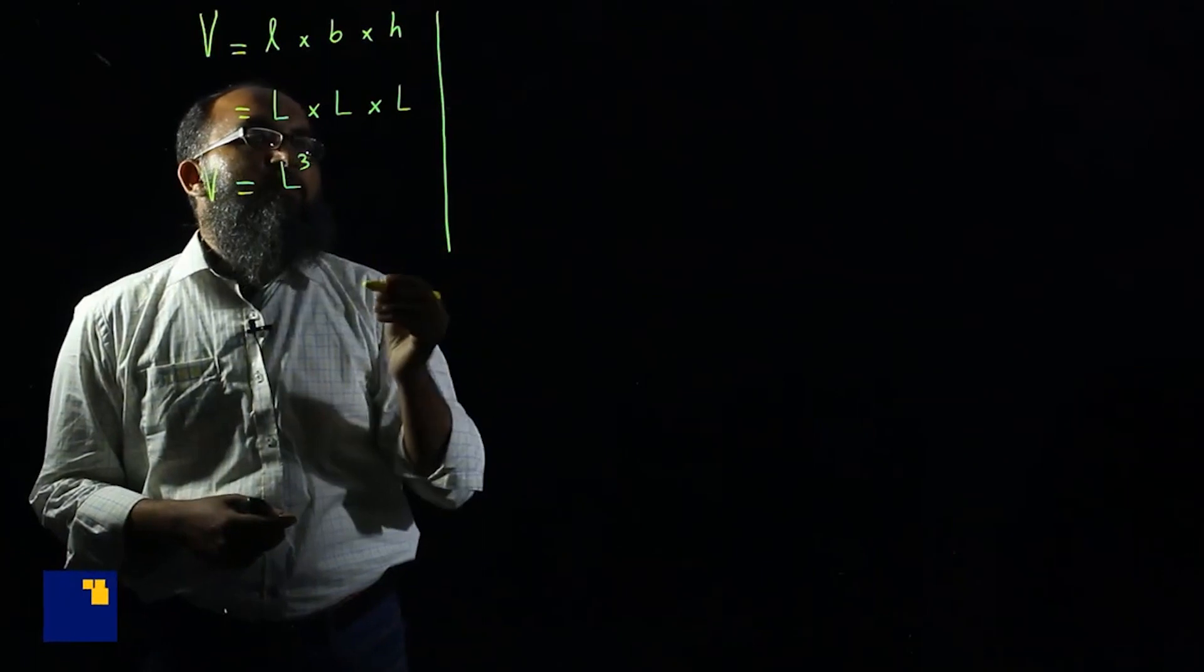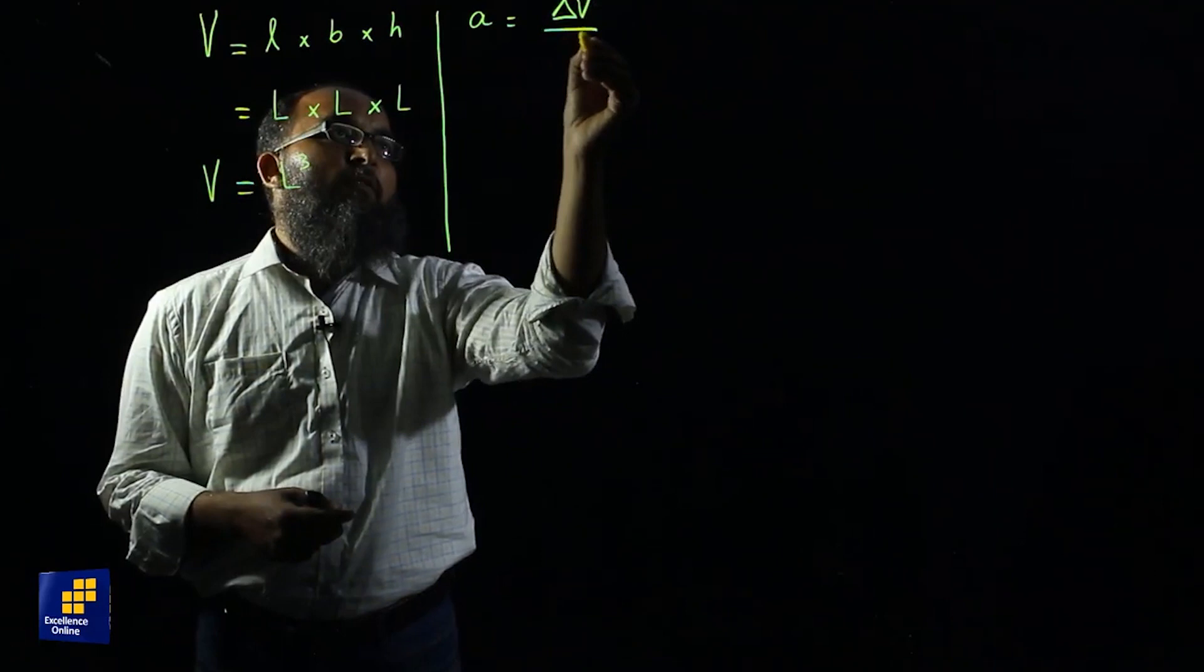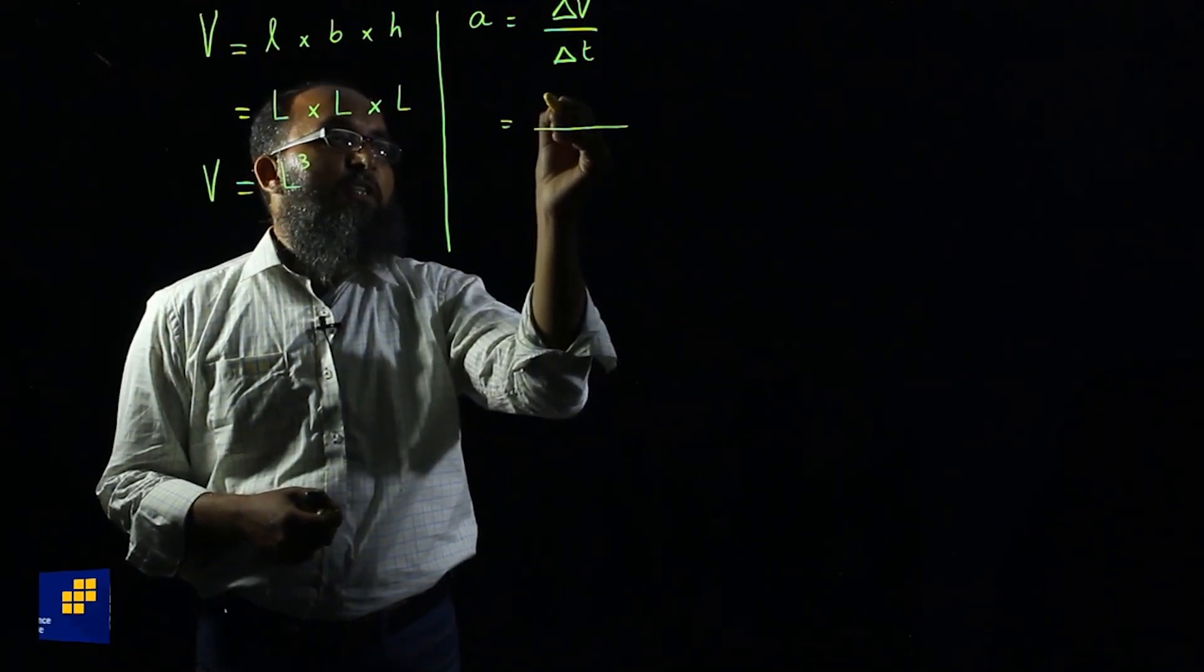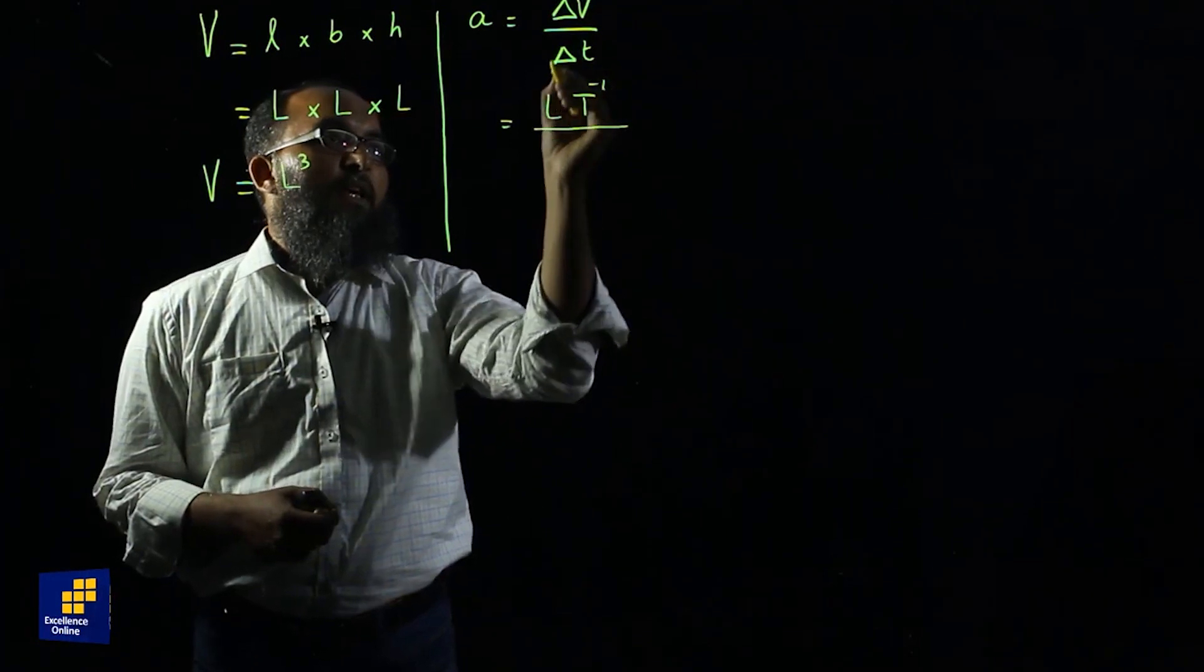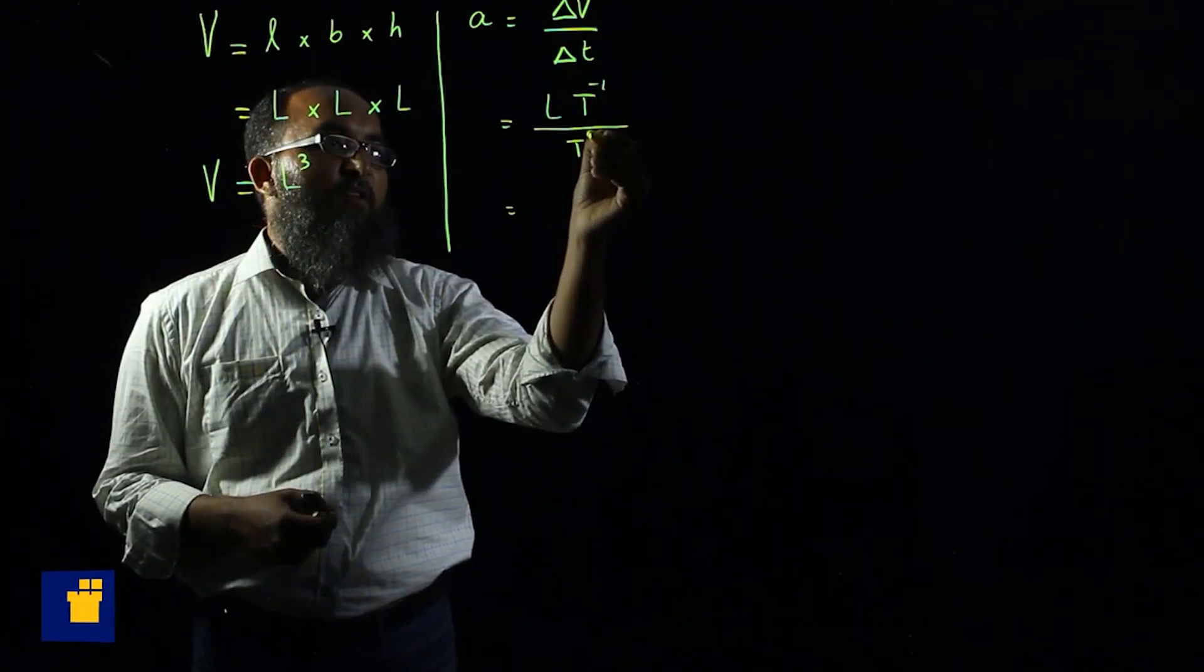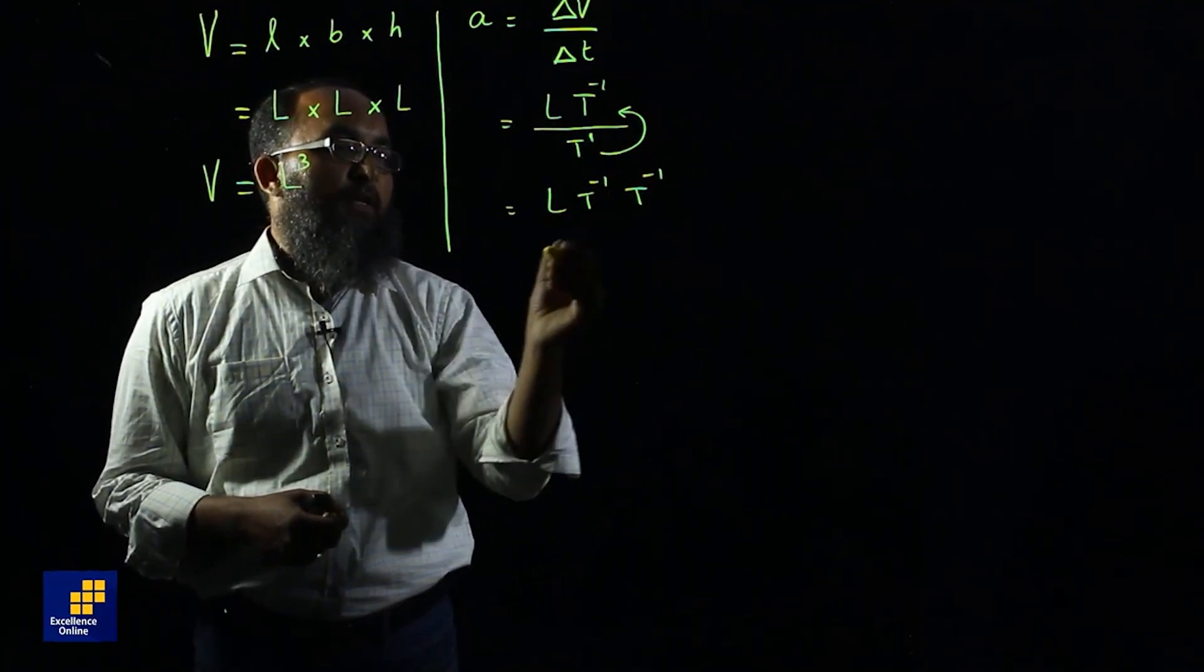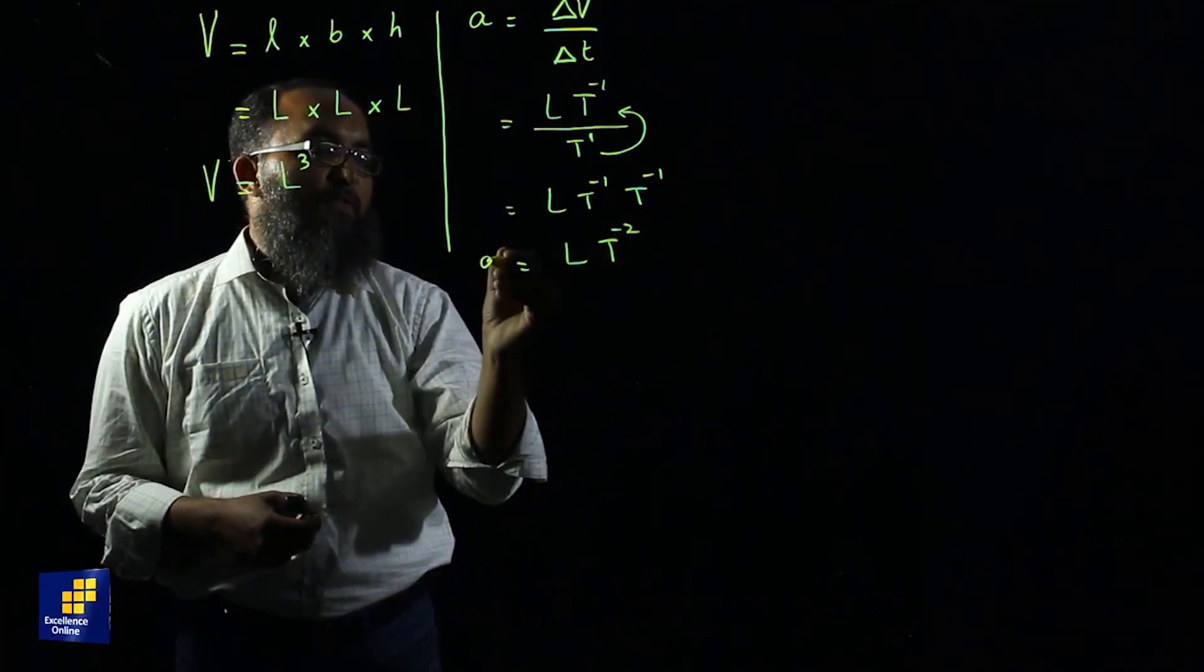On the other part, acceleration is defined as the rate of change of velocity with respect to time. We know the dimensions for velocity are L t power minus 1, and the dimension of time is t. If we move this t to the numerator, we have L t power minus 1 into t power minus 1. Finally, we get the dimensions of acceleration as L t power minus 2.